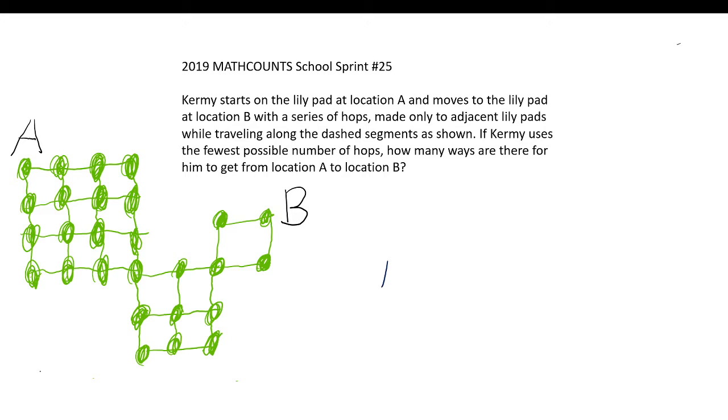Kermit starts on the lily pad at location A and moves to the lily pad at location B with a series of hops made only to adjacent lily pads.